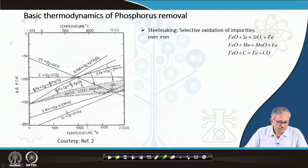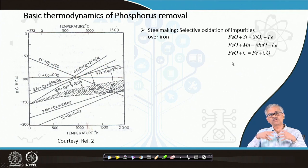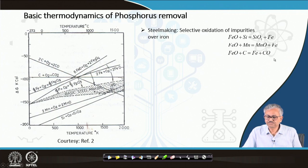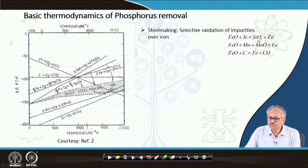From the Ellingham diagram, silicon oxide and manganese oxide are more stable compared to FeO even at high temperature, and CO is also much more stable than FeO. So all impurity oxides are more stable than iron oxide. Even though iron oxide forms fast, the impurities reduce FeO to iron and are themselves oxidized to SiO₂, MnO, and CO. CO is a gaseous product, so it leaves the system, driving the reaction forward. SiO₂ and MnO must be retained in the slag to keep the reaction moving forward.